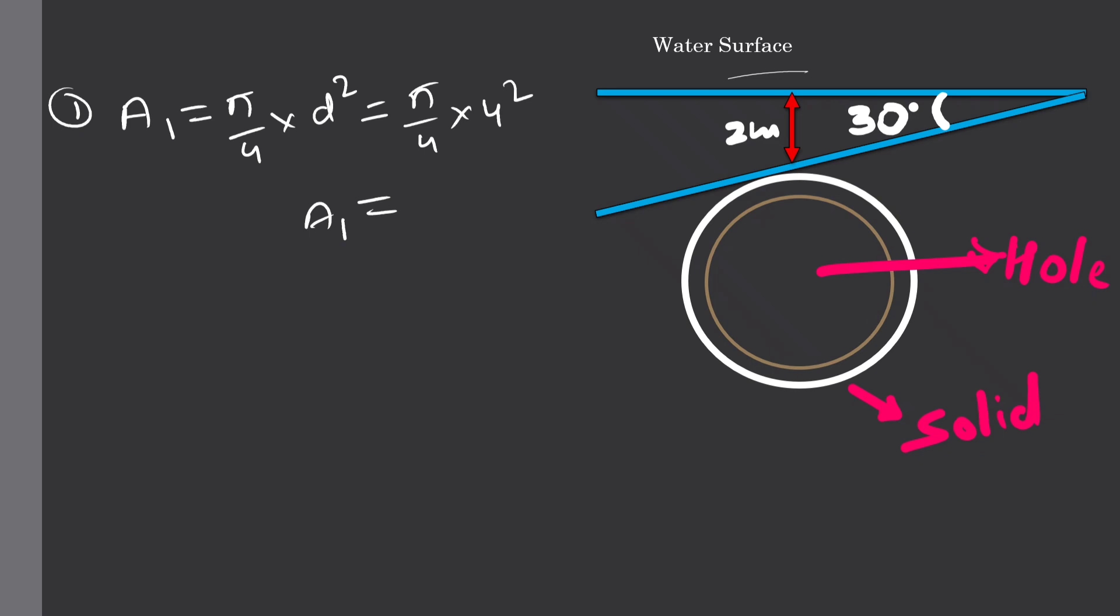Second thing, we have to calculate area of this center hole. So A₀ equals π/4 times d₀². That is equal to π/4 times 2.5 squared. After solving, we will get A₀ equals 4.9 square meters.